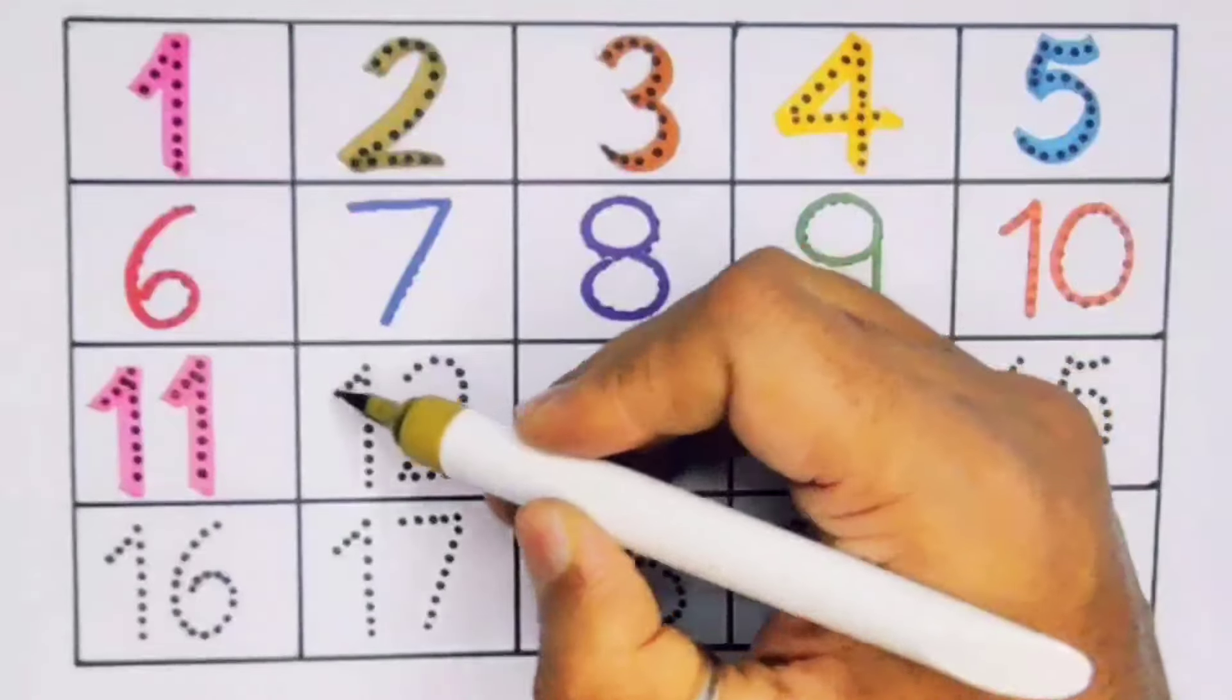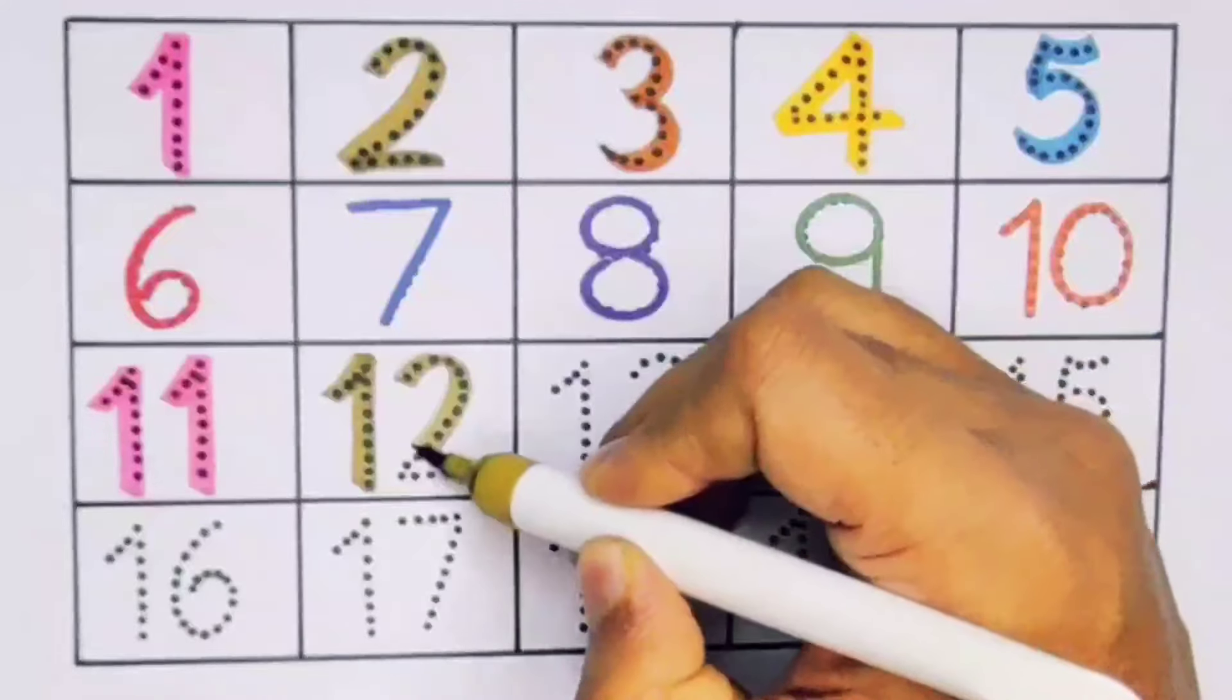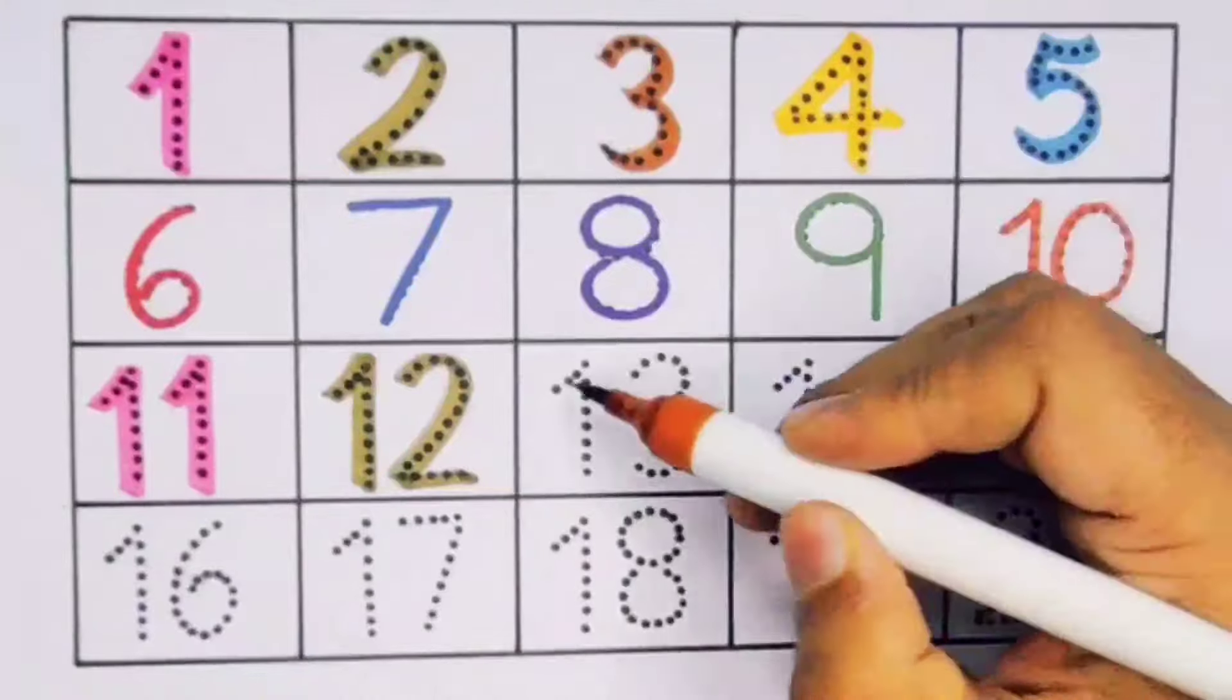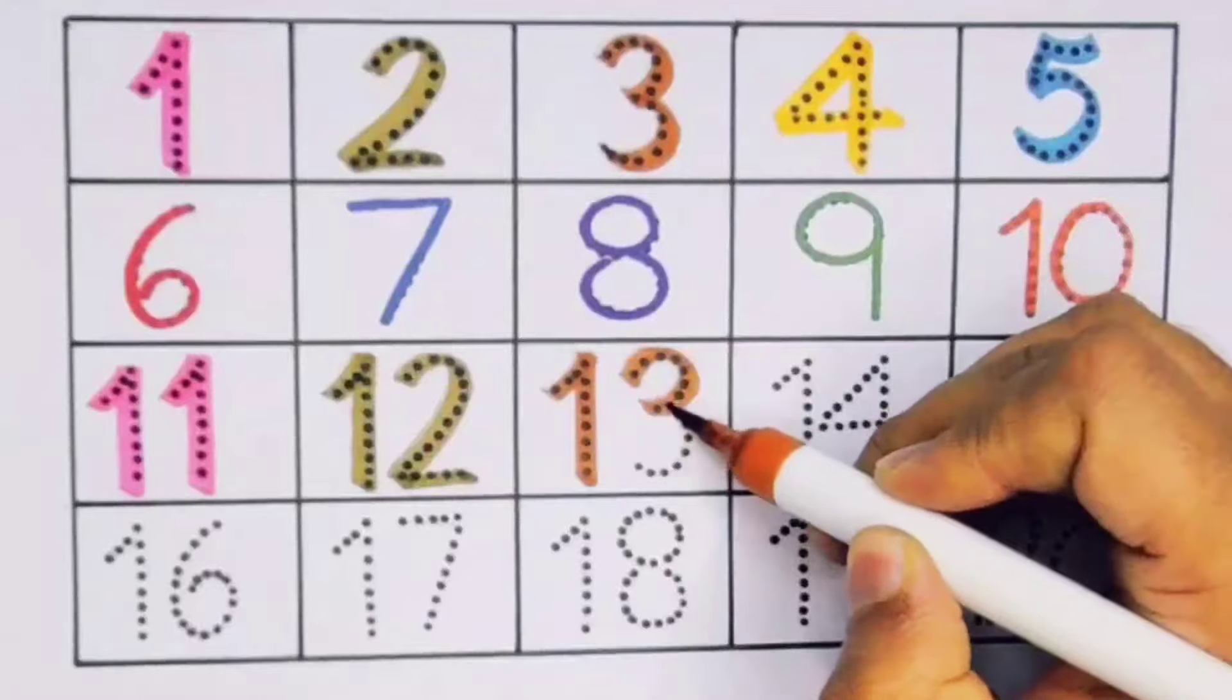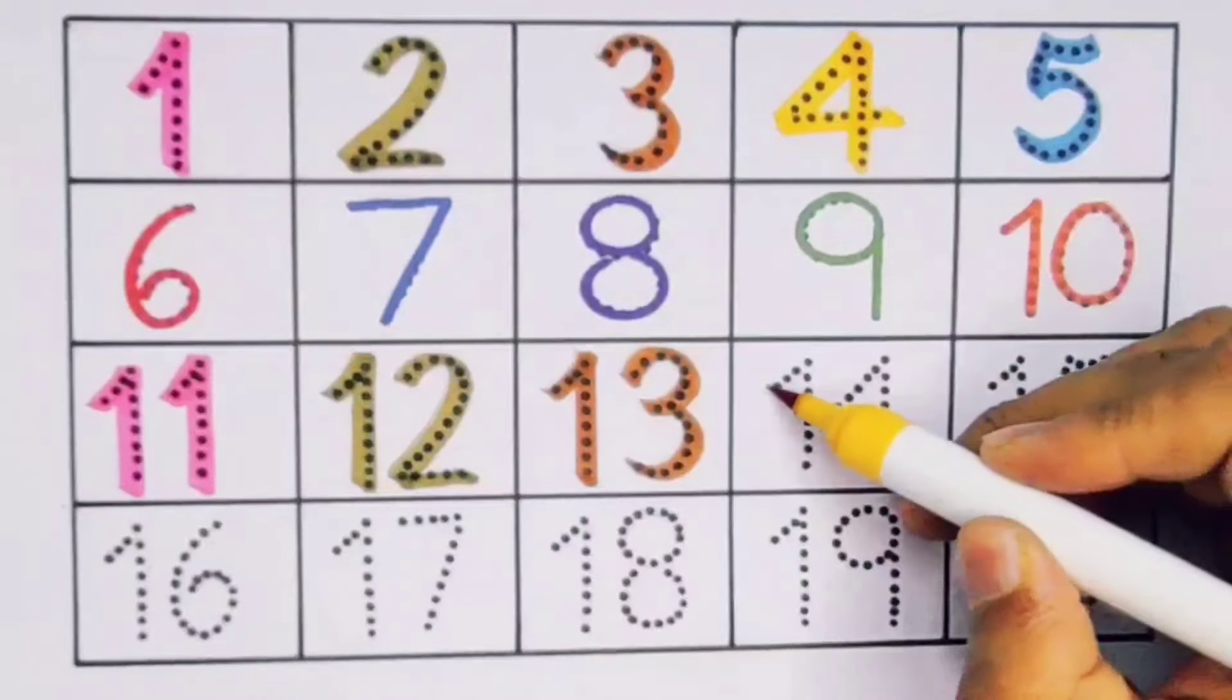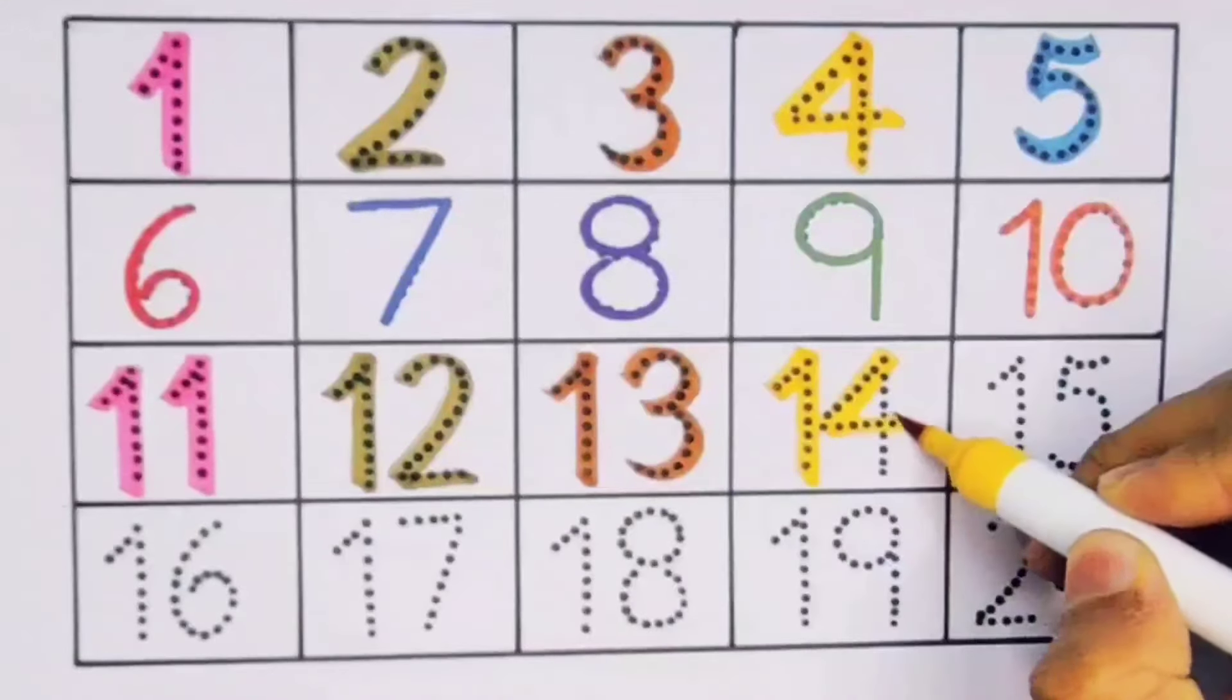Next twelve, one two, twelve, number twelve. Next thirteen, one three, thirteen, number thirteen. Next fourteen, one four, fourteen, number fourteen.